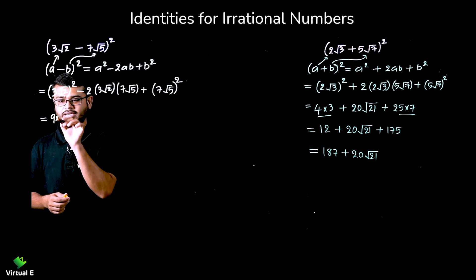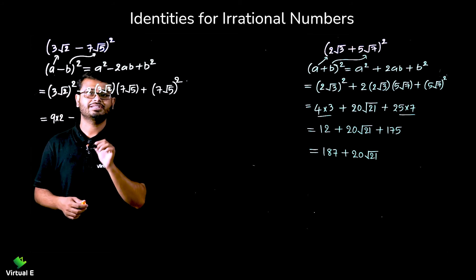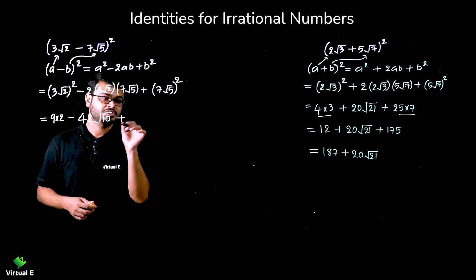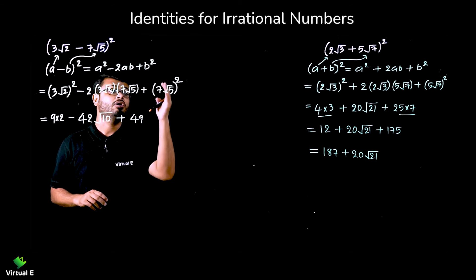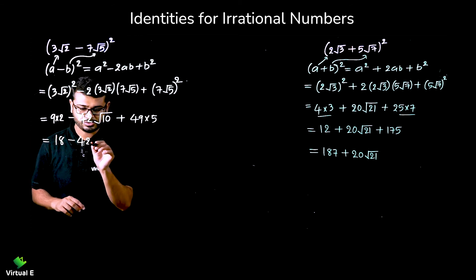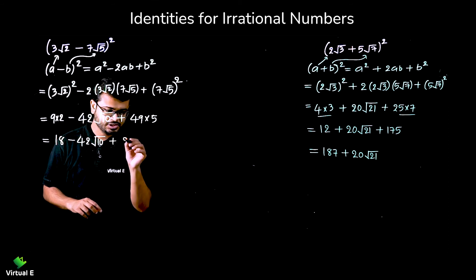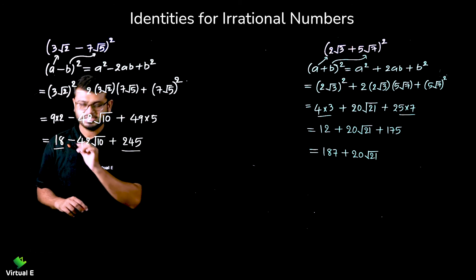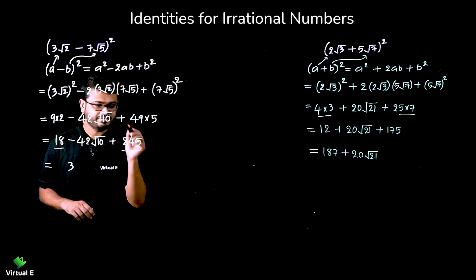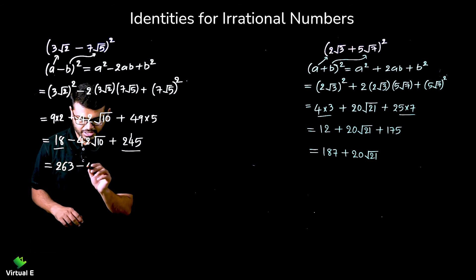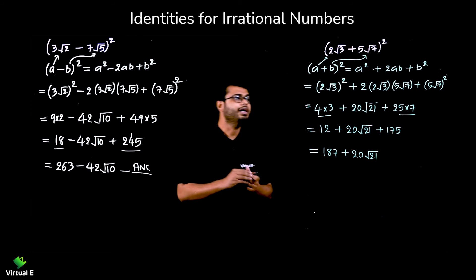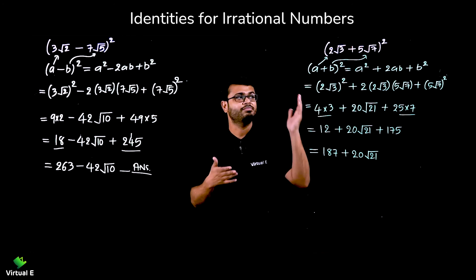So (3√2)²: 3² = 9 and (√2)² = 2, giving 18. Then 2·3·7 = 42 and √2·√5 = √10, so the middle term is 42√10. For (7√5)²: 7² = 49 and (√5)² = 5, giving 245. Now 18 and 245 are whole numbers, so 18 + 245 = 263, giving a final answer of 263 - 42√10.